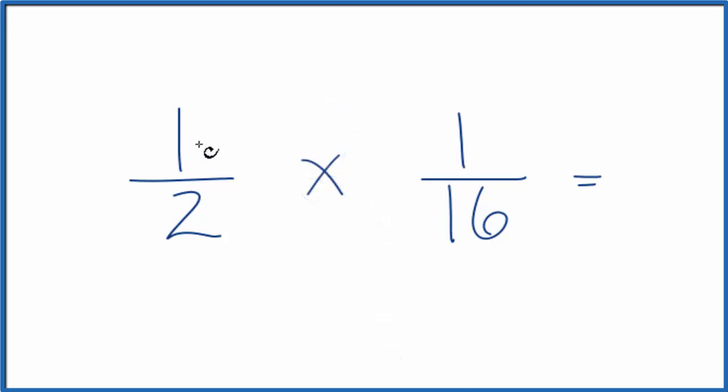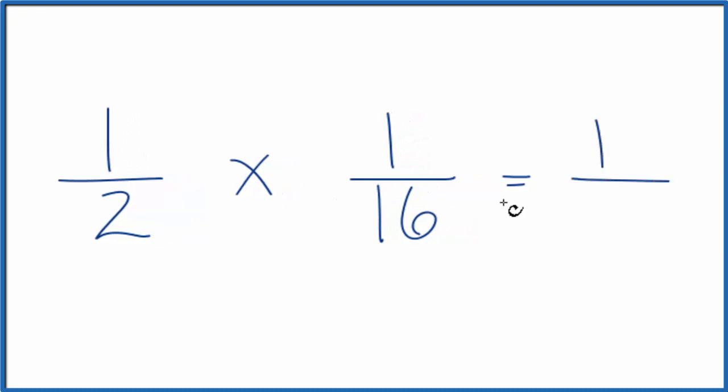So we multiply one times one, that gives us one, and two times sixteen, that's thirty-two. So one half of one sixteenth, that's equal to the fraction one thirty-second, or one over thirty-two.